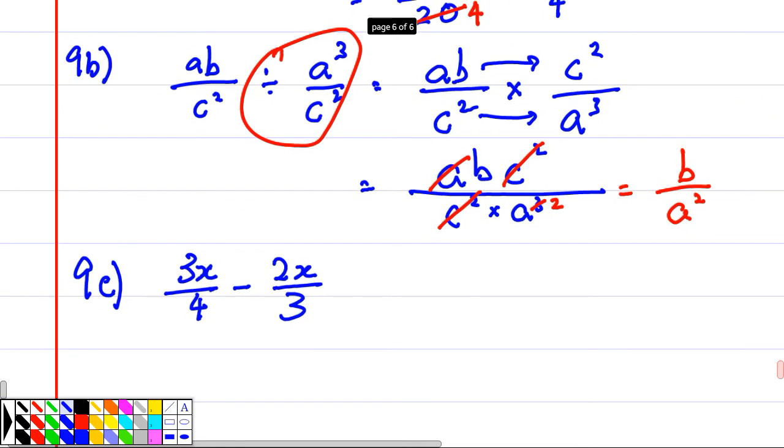Now, the last one, because it's a minus, mass and minus, I have to make sure the denominator is the same. Yeah, so in this case, this times 3 times 3 times 3. This one will be times 4 times 4.